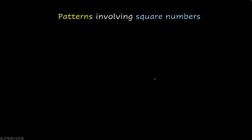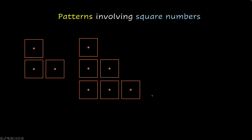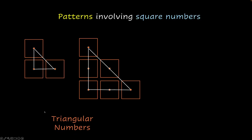Today we're going to talk about patterns involving square numbers. Here we have a configuration of blocks, and here's another configuration. If you find what is common between these, you can see that if you combine the centers of these blocks, it forms sort of a triangle. So that's a triangle, and here we have another triangle, and that's why this kind of configuration is known as a triangular number.